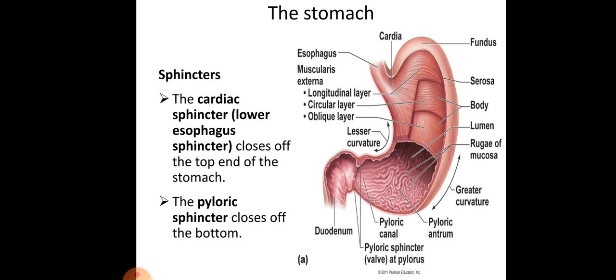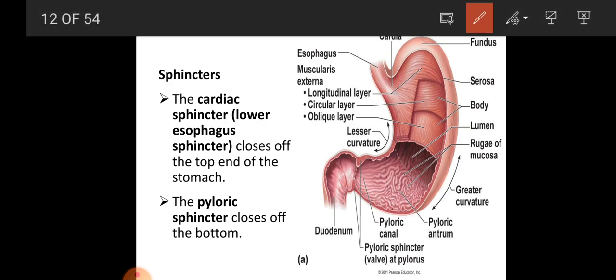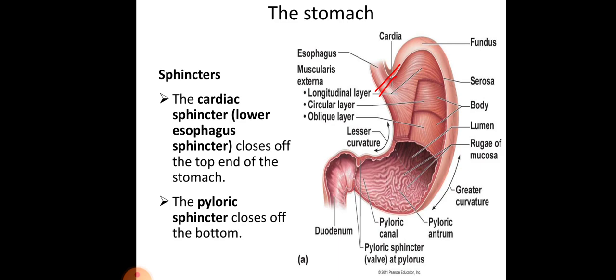The first is the cardiac sphincter, found at the lower end of the esophagus. It closes off the top end of the stomach. It is a physiological sphincter — not an anatomical sphincter, meaning it is not visibly distinct in the viscera, unlike anatomical sphincters which are clearly visible. The cardiac sphincter is physiological and the pyloric sphincter is an anatomical sphincter. The pyloric sphincter closes off at the bottom of the stomach.